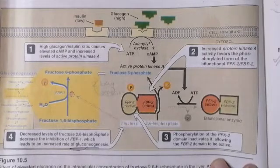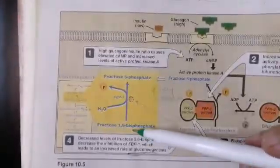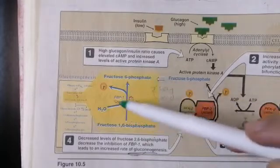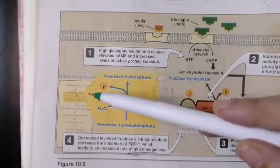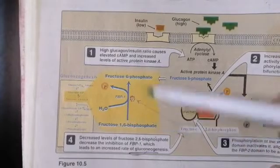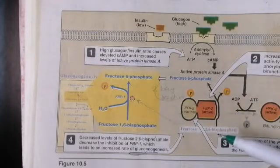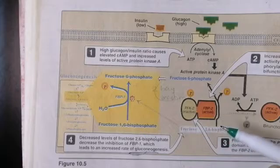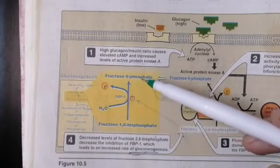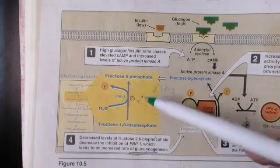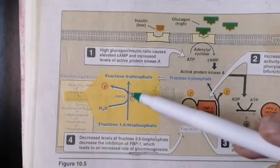First we need to know the important function of fructose 2,6-bisphosphatase. As shown in the figure, fructose 1,6-bisphosphate is converted into fructose 6-phosphate — this is an essential step of gluconeogenesis, the formation of glucose from non-carbohydrate sources, mostly from proteins. This conversion requires the enzyme fructose bisphosphatase 1, and this enzyme is inhibited by fructose 2,6-bisphosphate. So fructose 2,6-bisphosphate is a major inhibitor of fructose 1,6-bisphosphatase and therefore of gluconeogenesis.